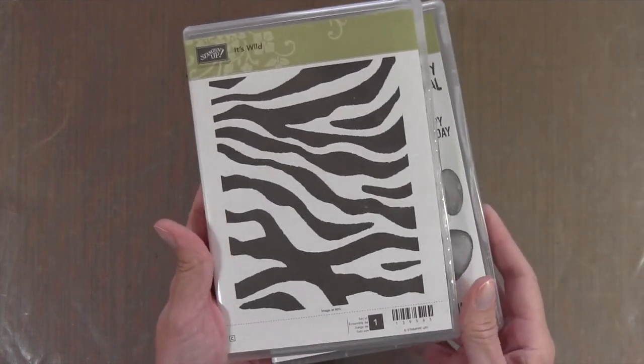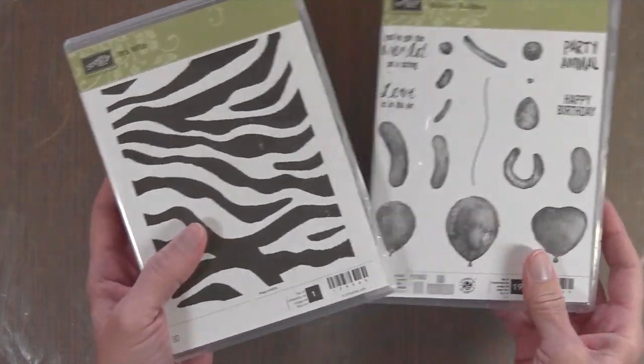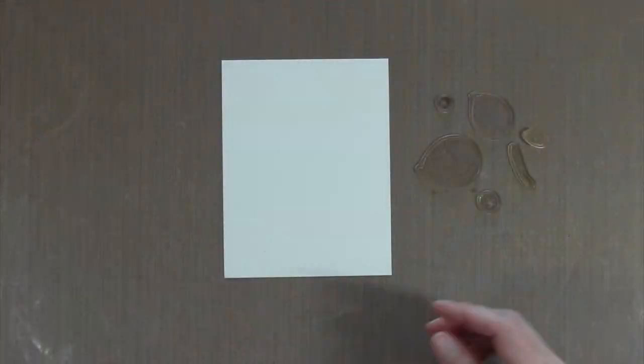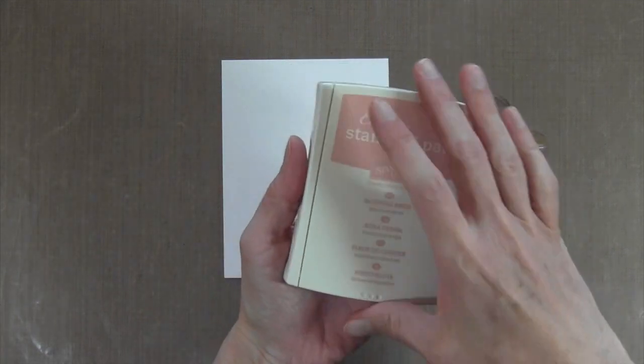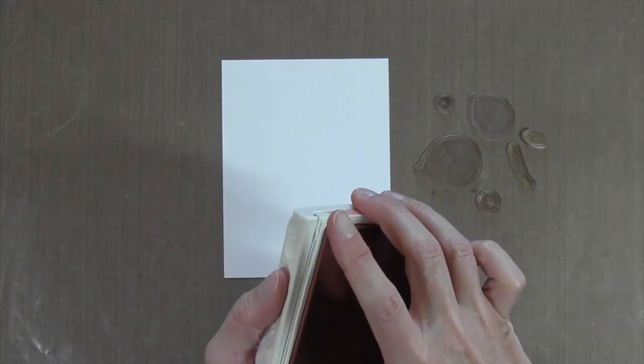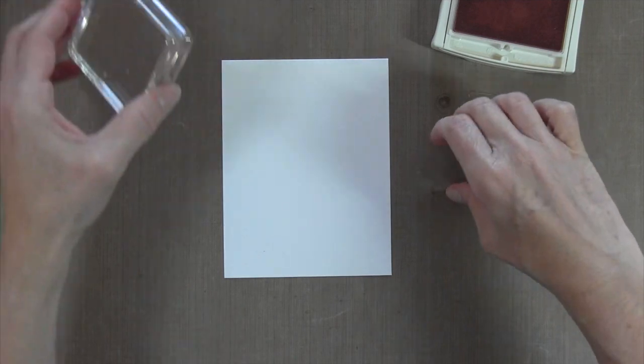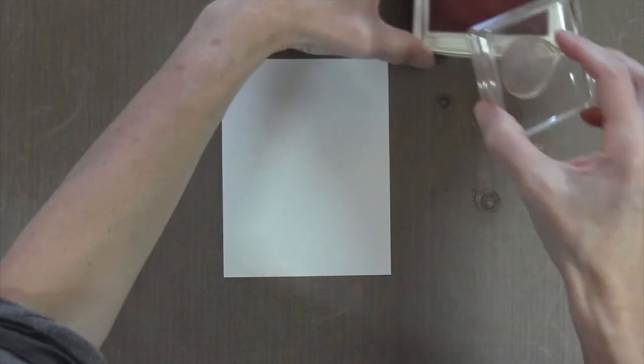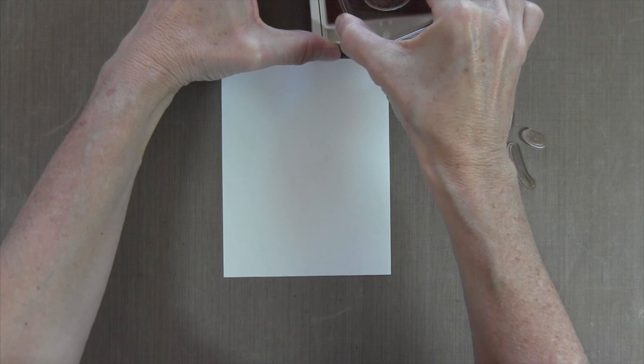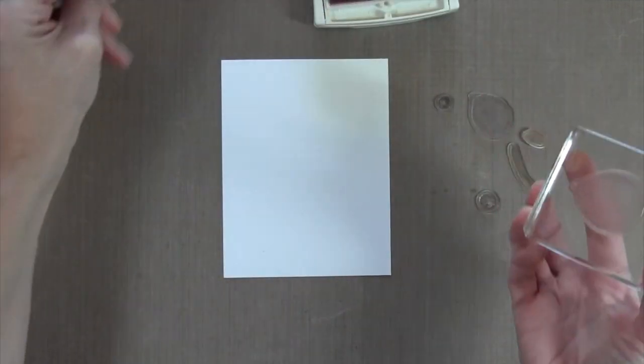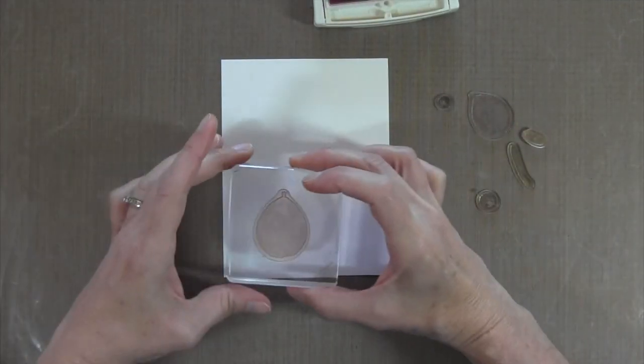I'm going to be using the Balloon Builder set and also this It's Wild background stamp, also by Stampin' Up. I'm going to start with the Blushing Bride Stampin' Up ink. It's kind of like a beige-y pink. I've got some Stampin' Up Whisper White cardstock, which I always use with Stampin' Up inks because you just get the best results that way.